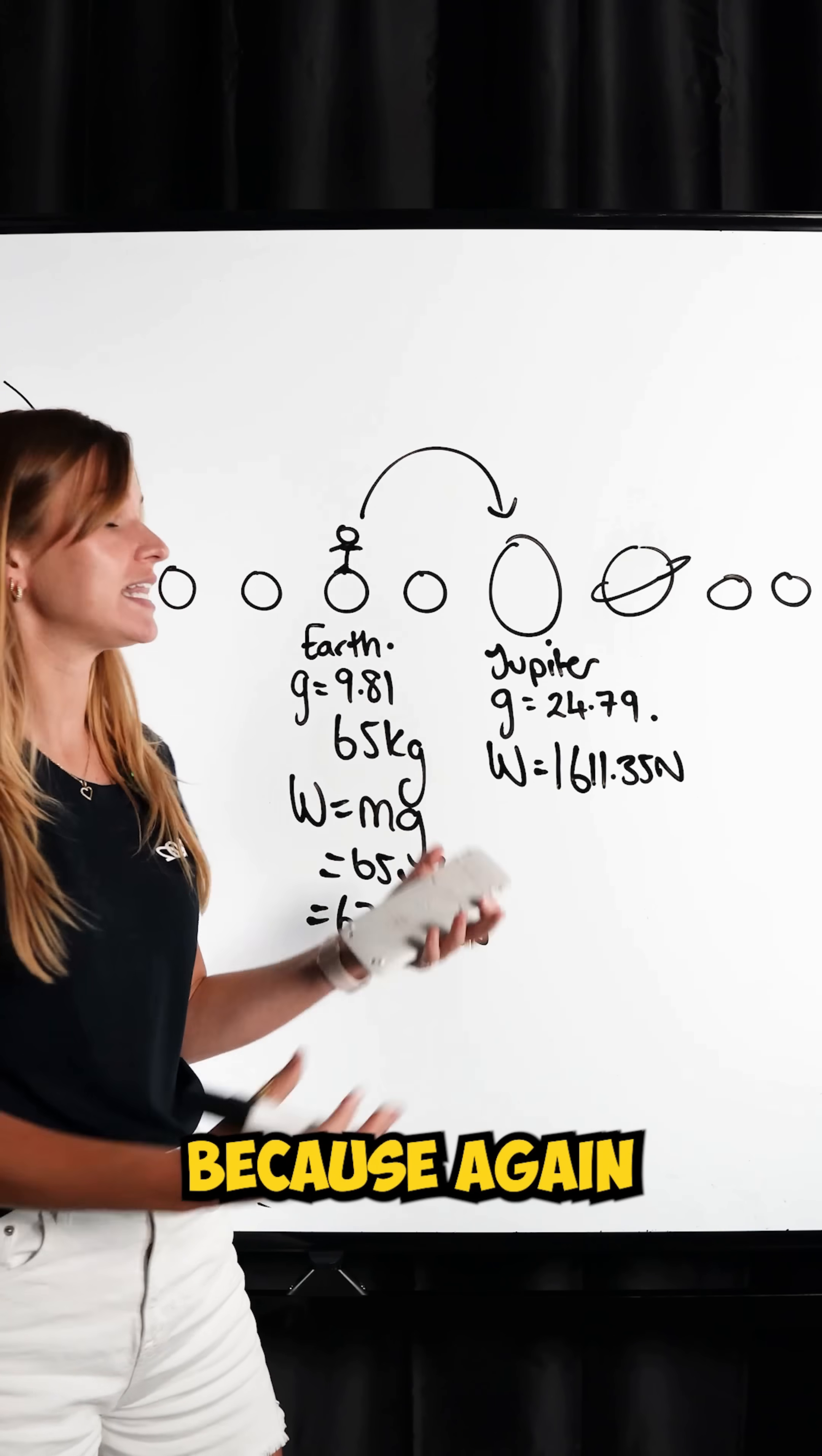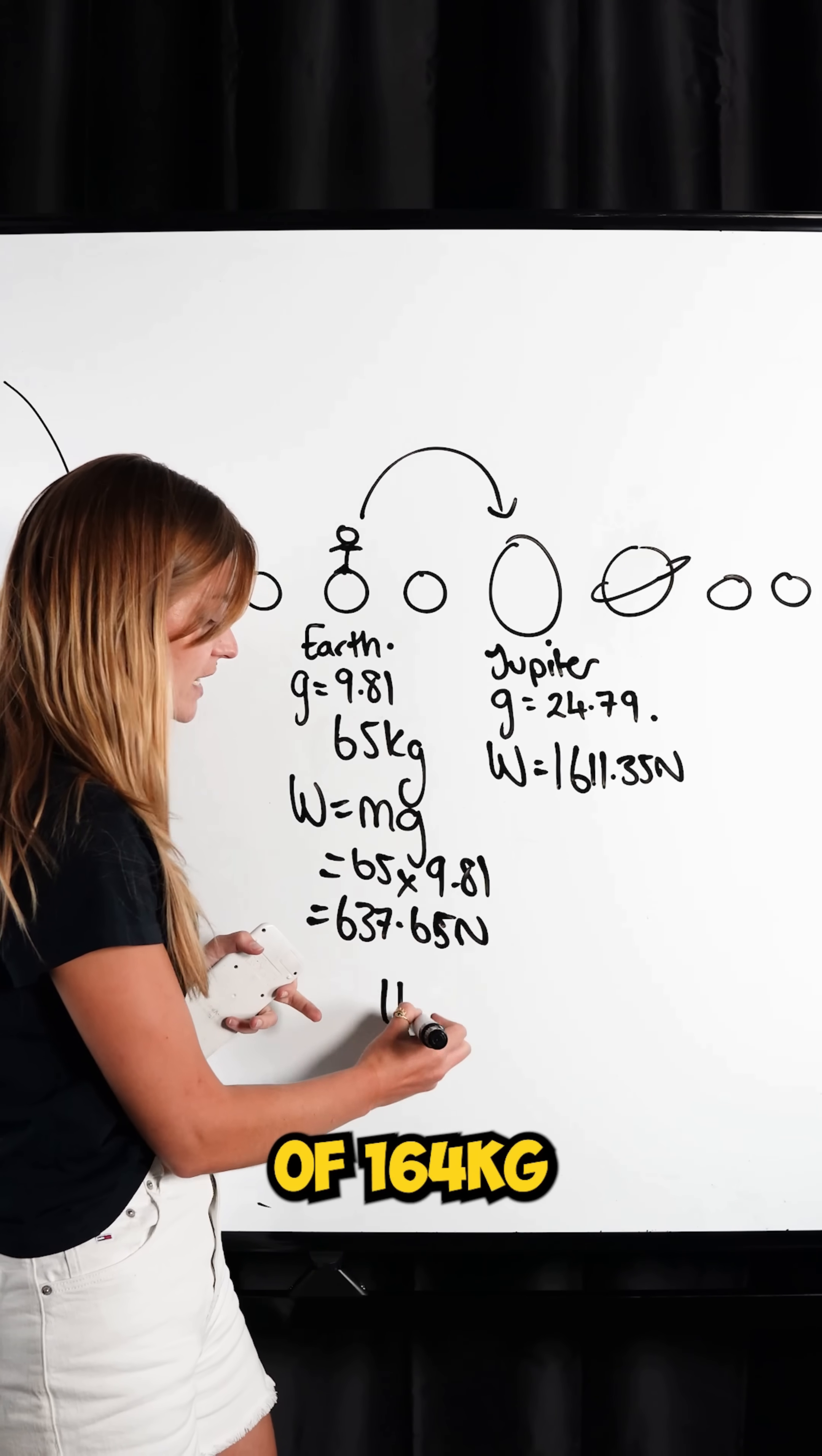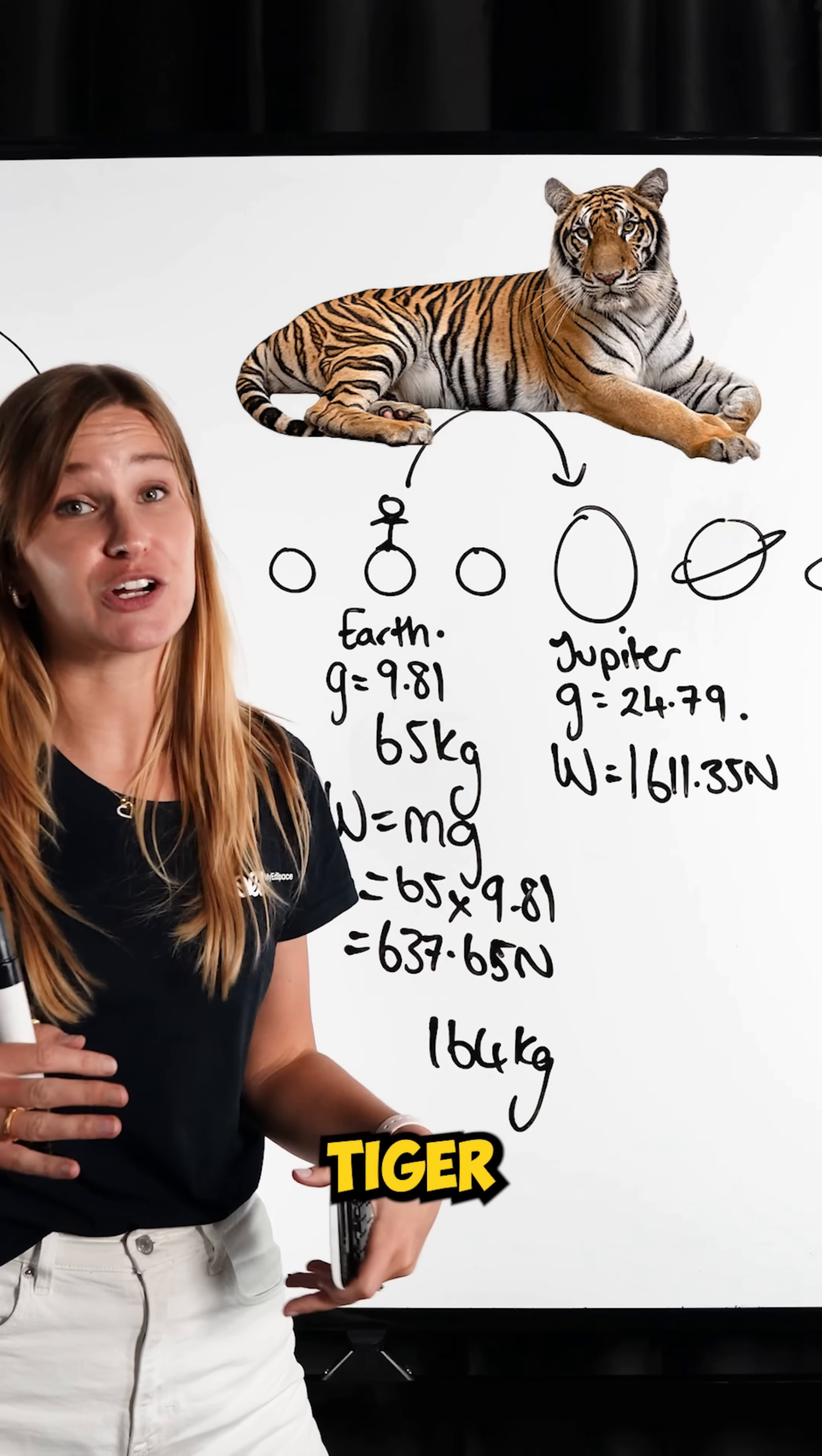So much bigger because again, the planet is so much larger, which is equivalent to a mass on Earth of 164 kilograms. That would be like me having the mass of a female tiger on Earth.